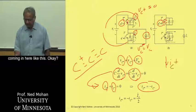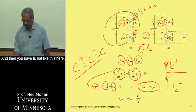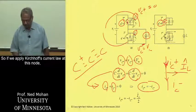IC plus is coming in here like this, then IC minus is like this here, and then you have IL hat like this here. So if you apply Kirchhoff's current law at this node,